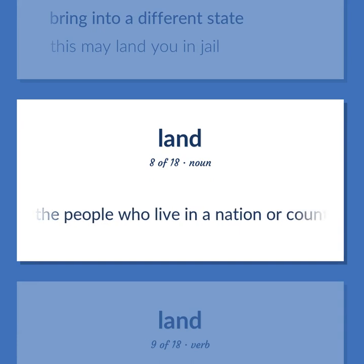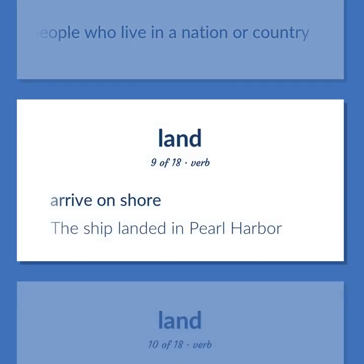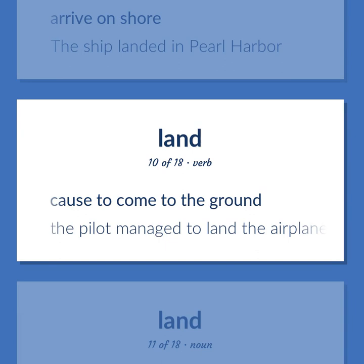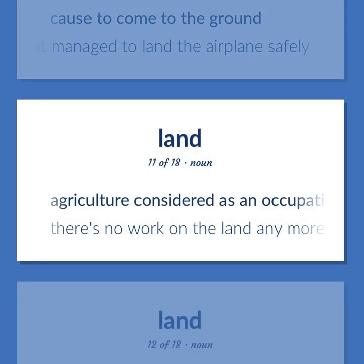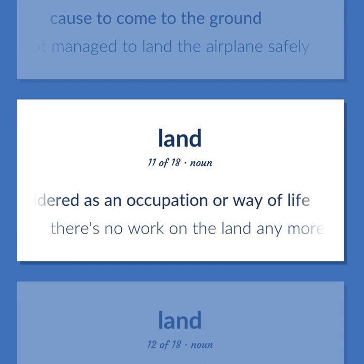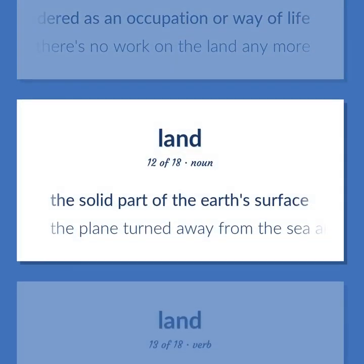The people who live in a nation or country. Arrive on shore — 'The ship landed in Pearl Harbor.' Cause to come to the ground — 'The pilot managed to land the airplane safely.' Agriculture considered as an occupation or way of life — 'There's no work on the land anymore.' The solid part of the earth's surface — 'The plane turned away from the sea and moved back over land.'